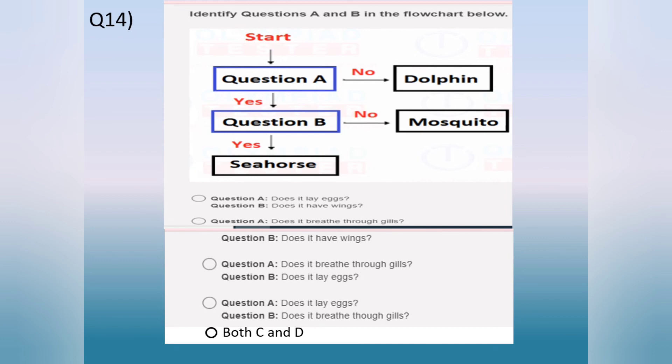Option C. Question A does it breathe through gills? Question B does it lay eggs? Option D. Question A does it lay eggs? Question B does it breathe through gills? Option E. Both C and D. The answer is option E, both C and D.